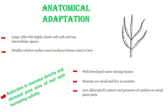The stomata are small and few in number. Recent studies show a reduction in stomatal density and stomatal pore area of the leaf with increasing salinity. It has been reported that once you increase salinity, both stomatal density and stomatal pore area of the leaf decrease.